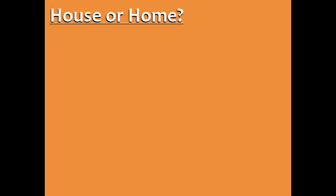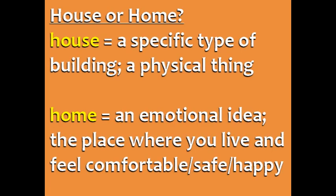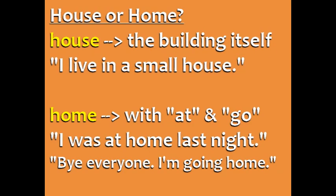House or home. Let's finish this lesson with the difference between house and home. A house is a specific type of building — a physical thing — but the word home is more of an emotional idea. It means the place where you live and where you have a special emotional attachment, where you feel comfortable, safe, and happy. Your home can be a house, an apartment, or another type of structure. In English, we often use the word house when talking about the building itself.